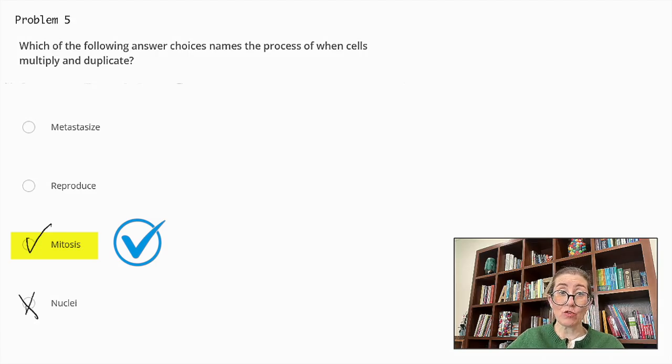Metastasize refers to the spread of cancer cells from the original site to other parts of the body. And that's why that's not correct. And while reproduce can refer to the creation of new cells, it is a general term and not specific to the process of cell division. So the correct answer is definitely mitosis here.